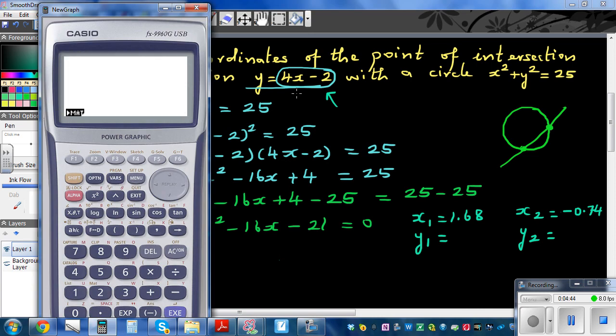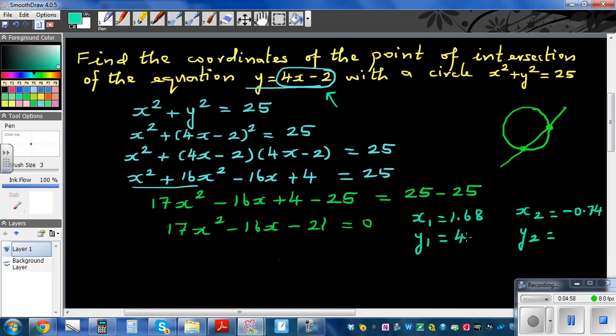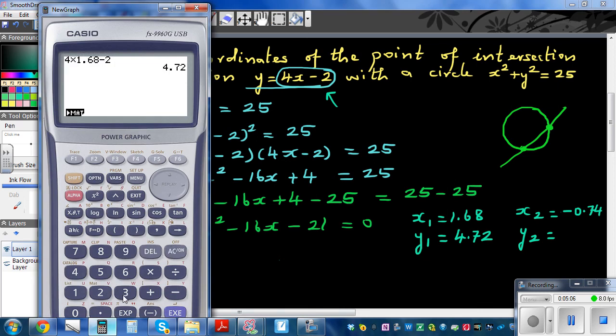So using this equation it is 4 times 1.68 minus 2, which is 4.72. So the y coordinate should be 4.72. When x coordinate is 1.68, the y coordinate is 4.72.